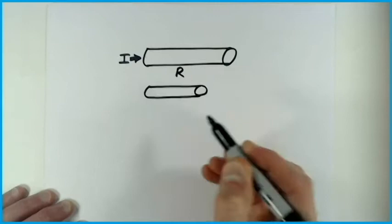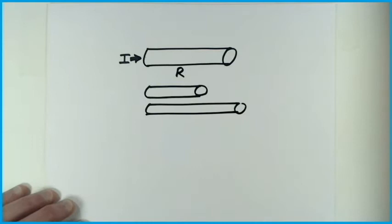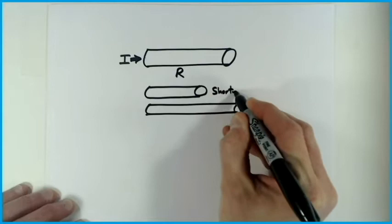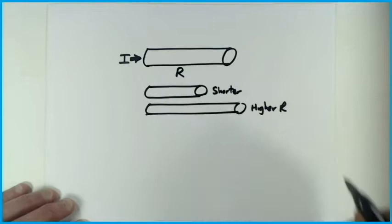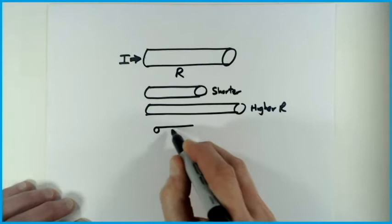The first is the length. Imagine we have a short wire and one that's double the length. Which one is it easier to send electrons through? Clearly it's easier to send through the shorter one, and of course the longer one will have a higher resistance.